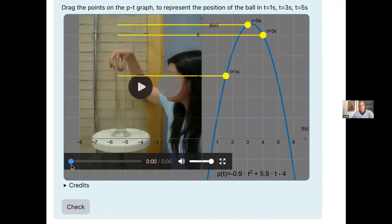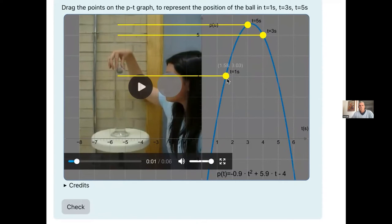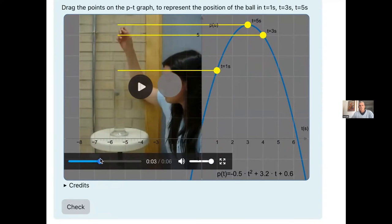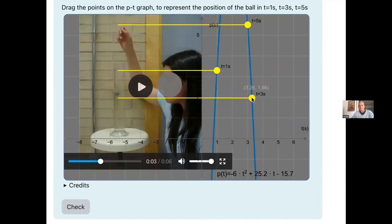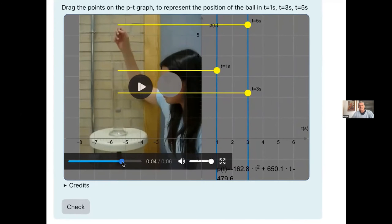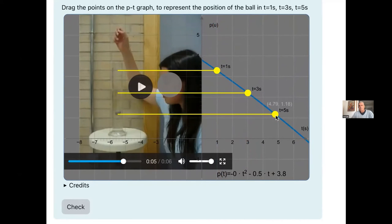For example, we're going to place where it is at second one. Second one here. And this is the place. Now second three, we move this way. Second three, this is more or less here. We have to put second five. Second five is here, and we place the point at second five.